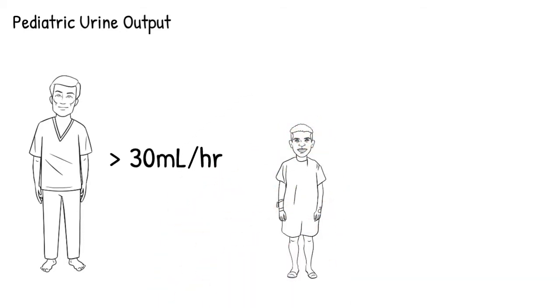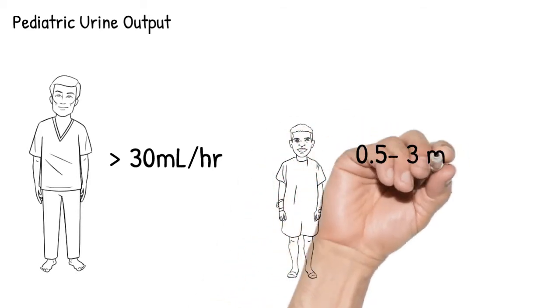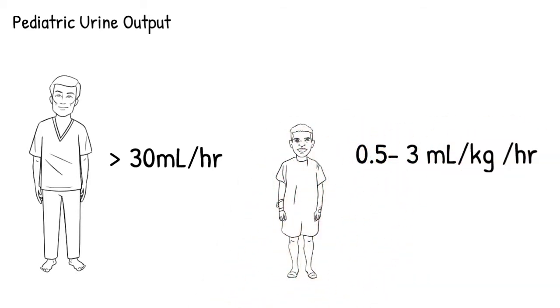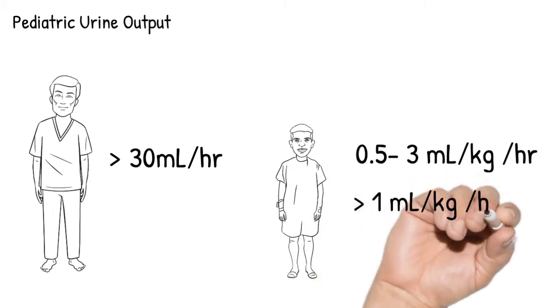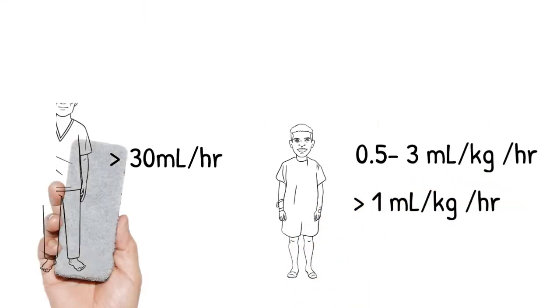Depending on the textbook that you'll look at, you'll find different ranges based on different age groups. So you'll find a good range between 0.5 to 3 mls per kilogram per hour. For me, the easiest to remember is greater than 1. Let me explain.